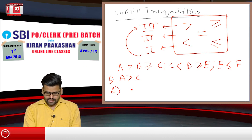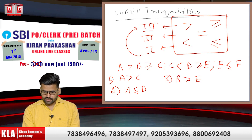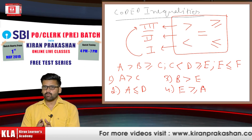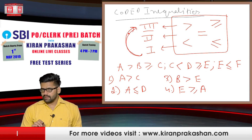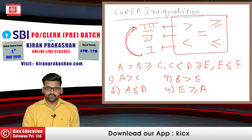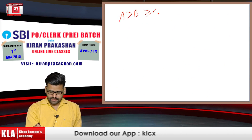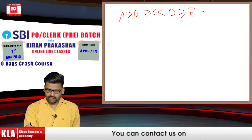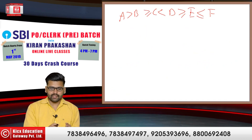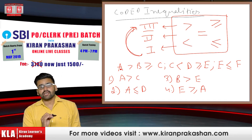You have these four options. As I told you, the first part has no connection with the third part. When you write the full series, it looks like: A > B ≥ C < D ≥ E ≤ F. This is the complete series formed after breaking the original into segments. Now let's talk about the first option.